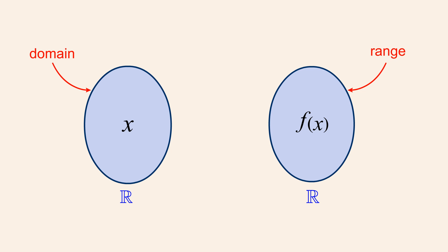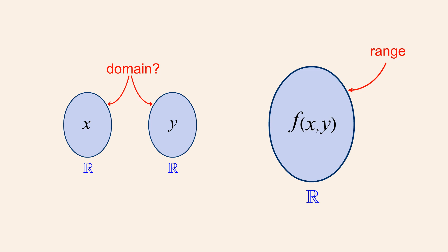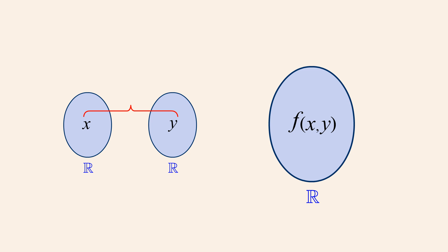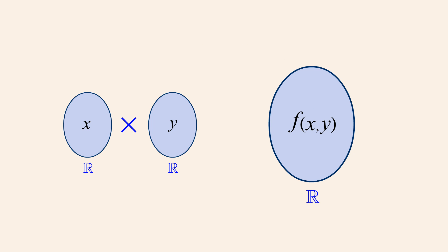For functions of a single real variable, the domain is typically R. But what would be the domain for a function of two real variables? The values of both variables together determine the function's output value. But by definition, functions can only map single elements to single elements. If a function has two input variables, somehow these variables must be combined into a single domain element, which the function can then map to a range element. This combining of variables is accomplished by forming the Cartesian product of the two sets of input values.